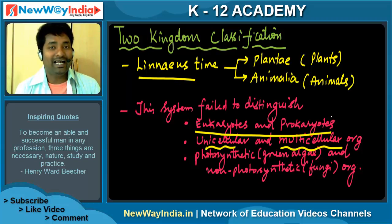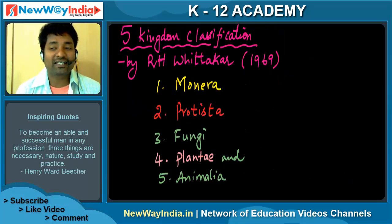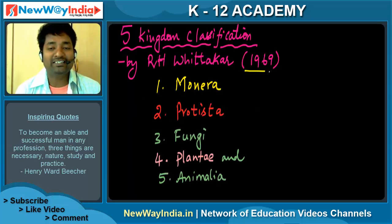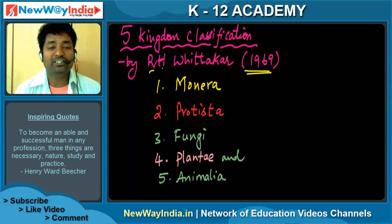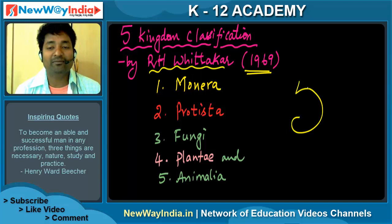Hence, there was a need for further classification, which came in 1969 by R.H. Whittaker — that is the Five Kingdom Classification.